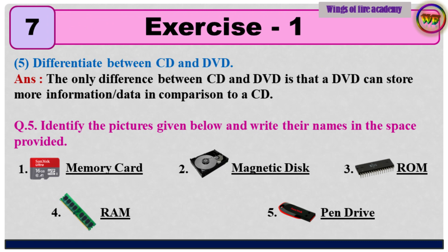Question 5: Differentiate between CD and DVD. Answer: The only difference between CD and DVD is that a DVD can store more information and data in comparison to a CD. Question number 5: Identify the pictures given below and write their names. 1. Memory card, 2. Magnetic disk, 3. ROM, 4. RAM, 5. Pen drive.